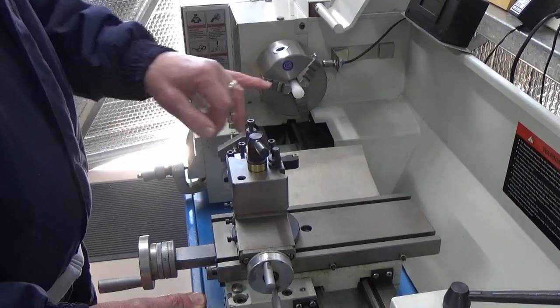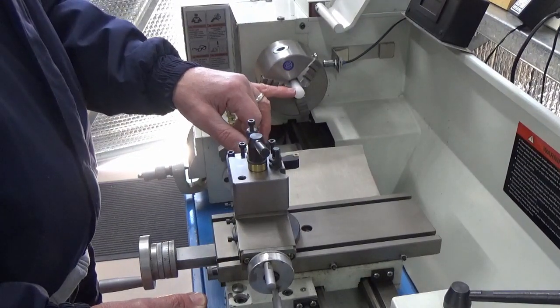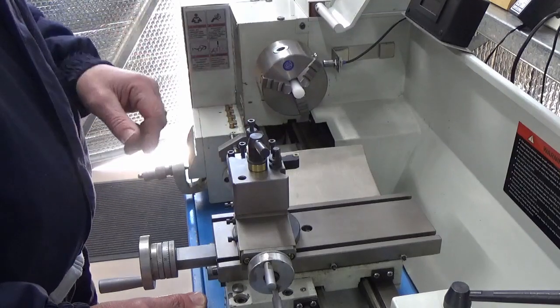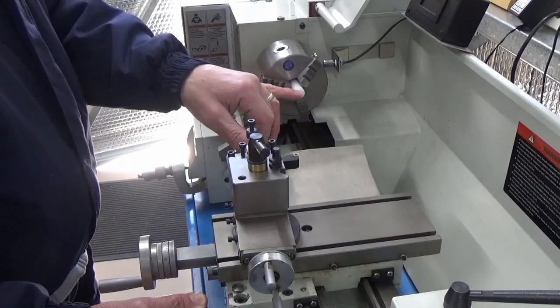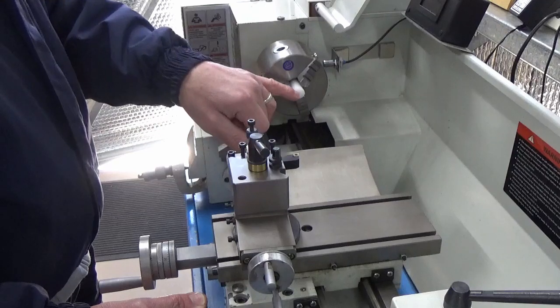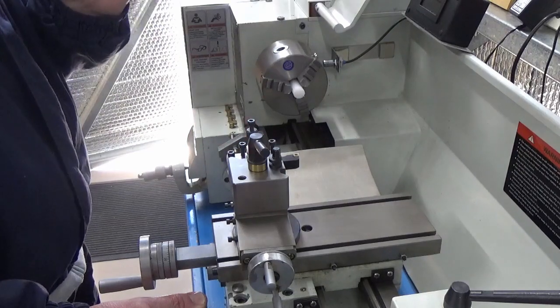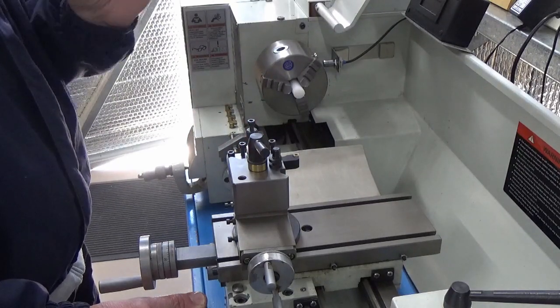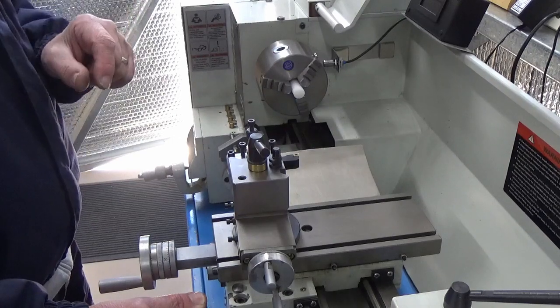So what I've got set up in the lathe is some white acetal. We were going to get black but we couldn't get hold of black so this will do. So what we're going to do now is just face that off and we're going to bore that so it's just a firm slip fit and it'll fit onto that collar area.